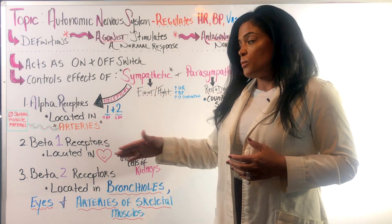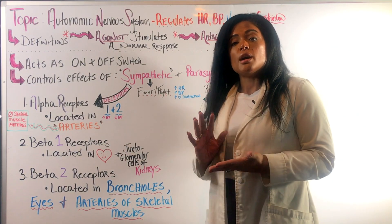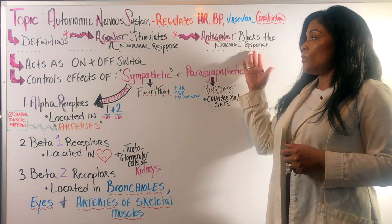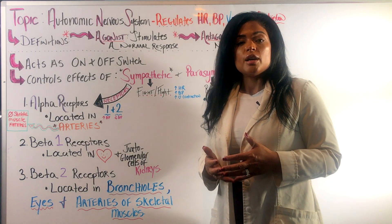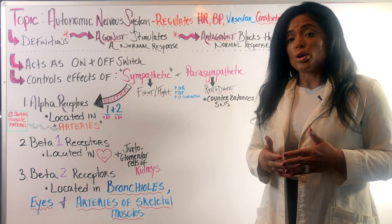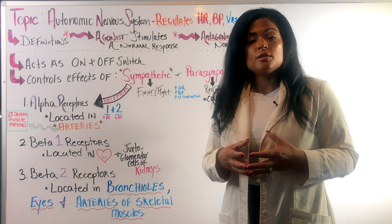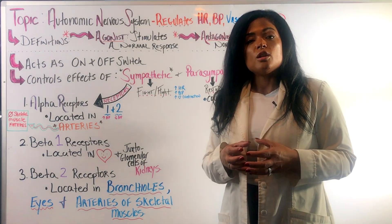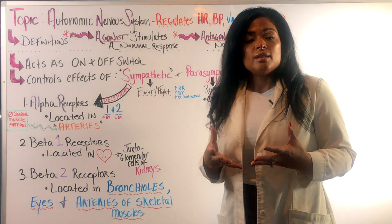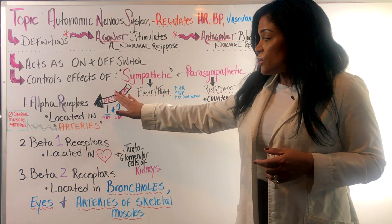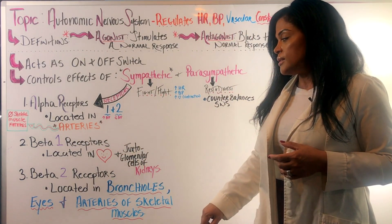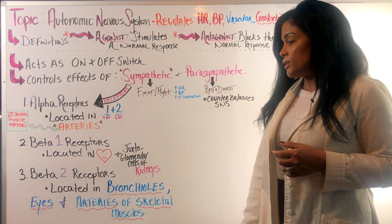If I give someone a beta-1 receptor antagonist, it's going to do the opposite response. A beta-1 receptor normally keeps your heart rate up and blood pressure up, so a beta-1 antagonist will decrease blood pressure and decrease heart rate. If I give a beta-2 receptor blocker or antagonist, instead of keeping those airways open, it blocks the normal response and constricts them. That is the case with non-selective beta blockers. To summarize: alpha receptors are in your arteries, beta-1 in your heart and juxtaglomerular kidney cells, and beta-2 in your lungs, eyes, and arteries of skeletal muscle.